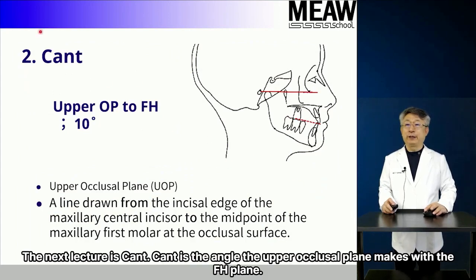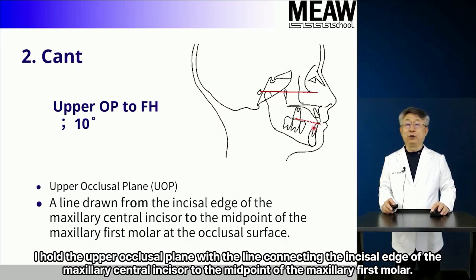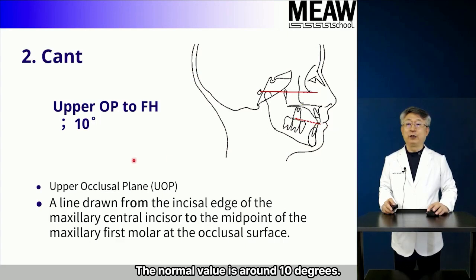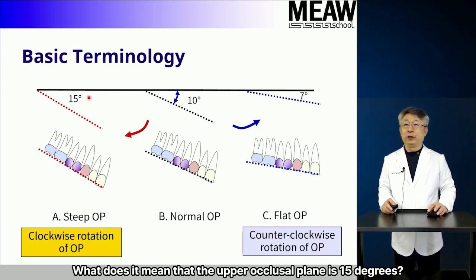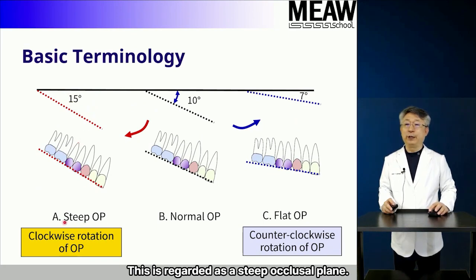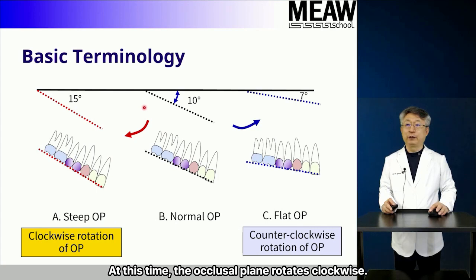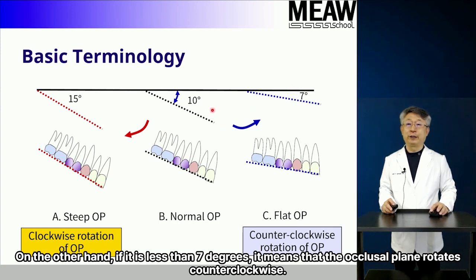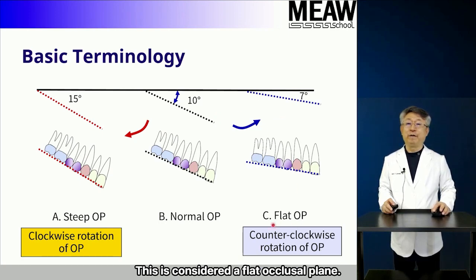The next item is Kant, which is the angle the upper occlusal plane makes with the FH plane. The upper occlusal plane is defined by the line connecting the incisal edge of the maxillary central incisor to the midpoint of the maxillary first molar. The normal value is around 10 degrees. If the upper occlusal plane is 15 degrees, it is regarded as a steep occlusal plane, and the occlusal plane rotates clockwise. If it is less than 7 degrees, the occlusal plane rotates counterclockwise and is considered a flat occlusal plane.